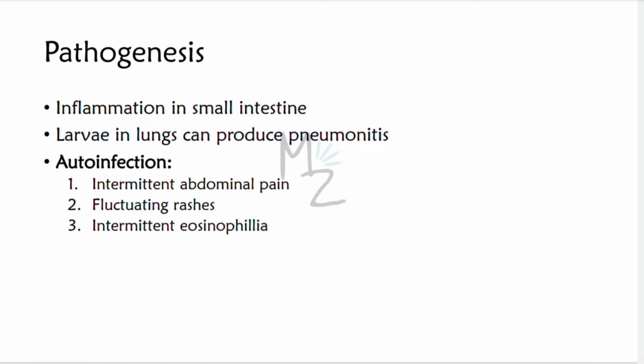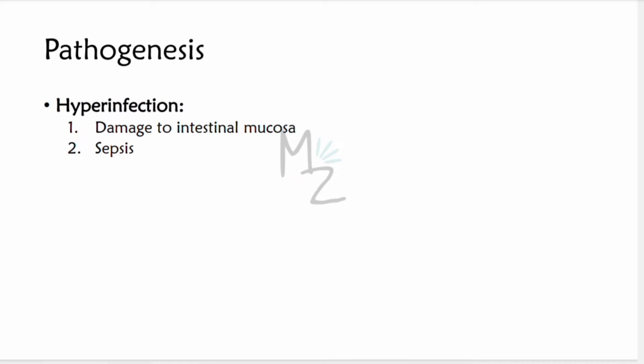Regarding pathogenesis: adult female worms in the wall of the small intestine can cause inflammation, resulting in watery diarrhea. Larvae in the lungs can produce a pneumonitis, similar to that caused by Ascaris. Auto-infection can result in chronic strongyloidiasis, characterized by intermittent abdominal pain, fluctuating rashes, and intermittent eosinophilia.